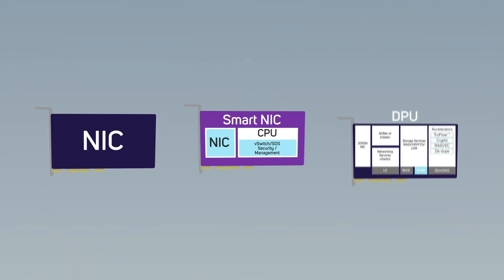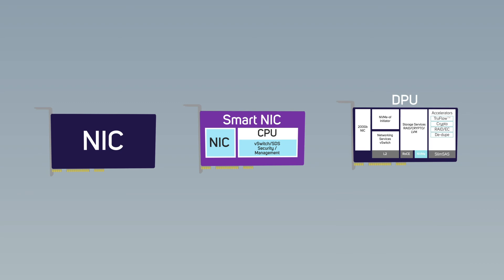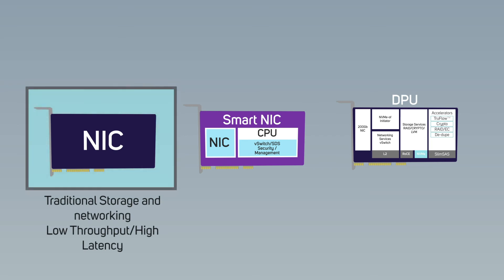So now we know what a DPU is, we can move on to address how and when they should be used. From the comparisons we've just run through, only a single interface card is needed in the server — either a NIC, a smart NIC, or a DPU — as they all take care of the basic networking functions. Whether you need a full DPU will depend on the type of applications and storage you're using. If your servers don't require high performance, a standard NIC will be fine, as the host CPU and memory will carry out the data processing functions.